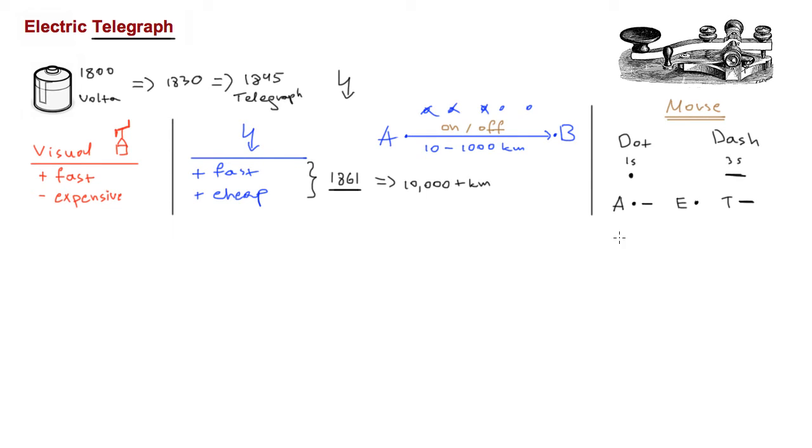If we wanted to send a message like 'eat' using Morse code, that would be a dot for the letter E, followed by letter A which is a dot and a dash, and another dash for the letter T. Once we had the Morse code, and because it was so much cheaper to transmit messages over copper cables, communities started connecting with each other. For the first time, we started seeing these networks emerge.